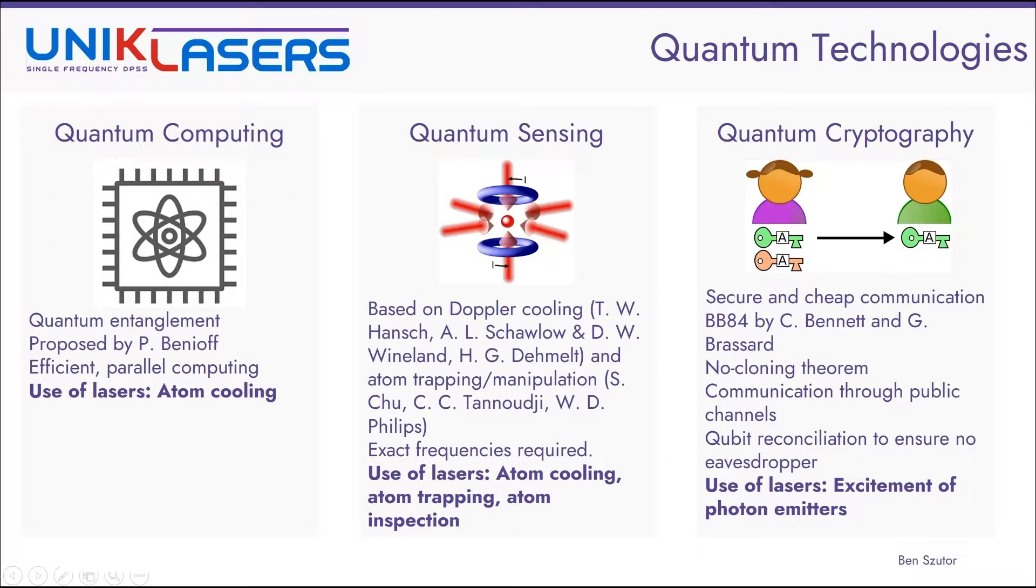When we talk about quantum technologies, we usually separate it into three different groups. Our main interest lies in quantum sensing. I'm going to talk a bit more about that later, but just to introduce, quantum computing is based on quantum entanglement, first proposed by Paul Benioff in the 1980s. It is an efficient way to do high-speed, high-efficiency parallel computing, with a lot of potential to outperform classical methods. And there's some potential for lasers in these applications, for atom cooling or atom conditioning for the atoms that are used in the computers.